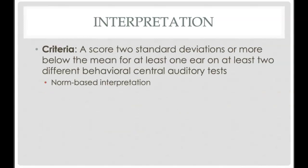According to ASHA, a score of two standard deviations or more below the mean on at least two different behavioral central auditory tests is used to diagnose APD. Some clinicians may use three standard deviations below on a single subtest. To clarify: typically you need to score at least two or more standard deviations below the mean on at least two tests, or three standard deviations below the mean on one test.